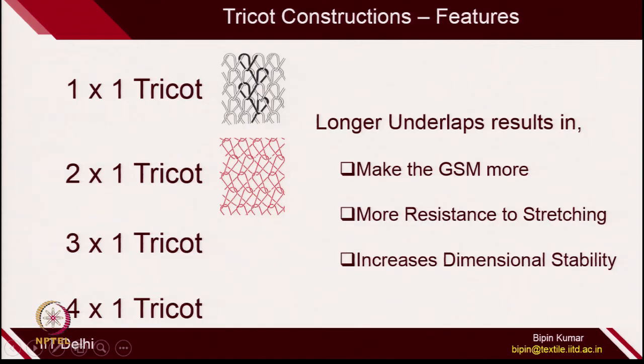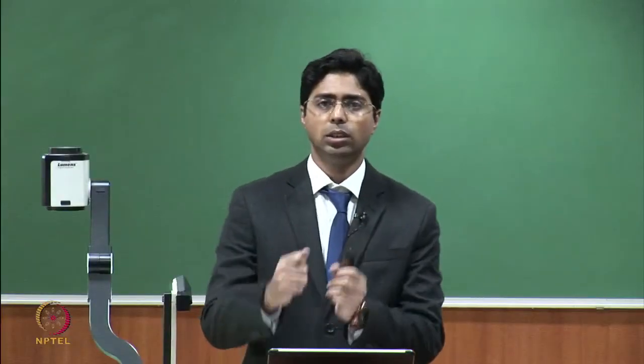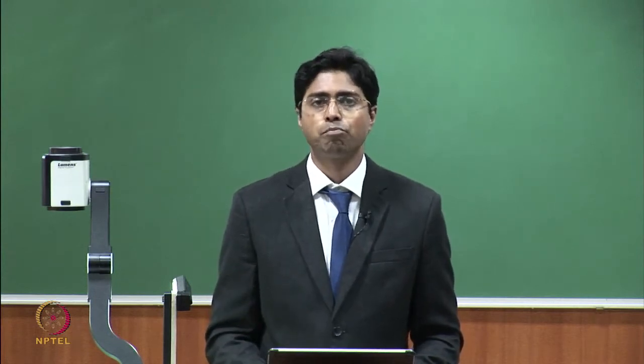If you want a very dimensionally stable fabric, you can choose 4 cross 1 tricot constructions. In 1 cross 1 tricot, two adjacent columns connect and the fabric can be easily distorted. But with longer underlaps, it is very difficult to distort the fabric. Tricot is the most widely used warp knitted construction in the market.